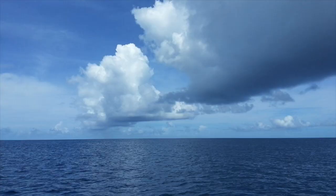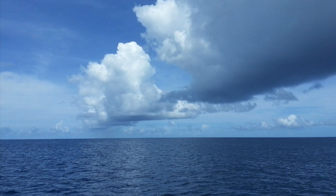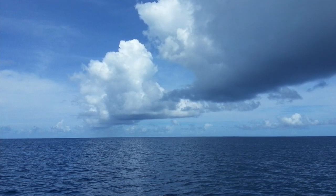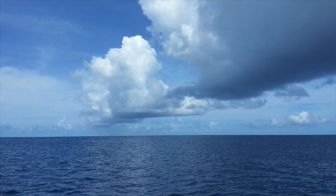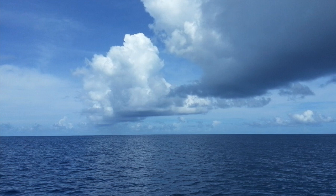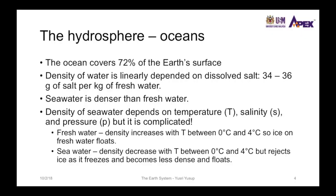The ocean covers approximately 72 percent of the Earth. A key characteristic of ocean water is its density, because water contains dissolved salts and density is linearly dependent on the amount of salt dissolved. The range of salt dissolved in ocean water is from 34 to 36 grams of salt per kilogram of freshwater, making seawater denser than freshwater.